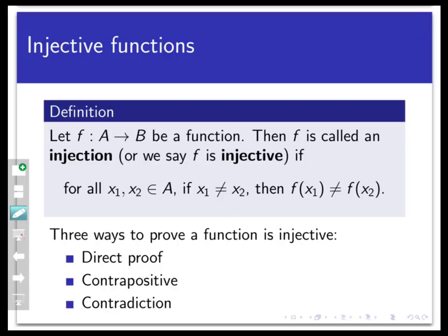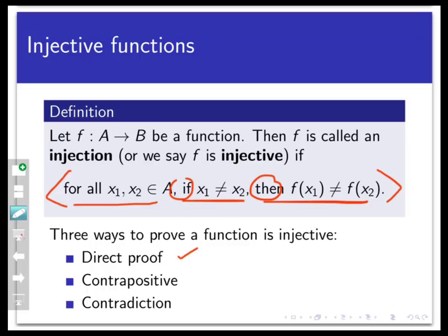The main point to note in the definition of injective functions is that it involves a universally quantified conditional statement: for all x1 and x2 in the domain of f, if x1 is not equal to x2, then f(x1) is not equal to f(x2). This is a form of statement we have worked with throughout the course. To prove a function satisfies this definition, I need to prove this conditional statement, which means three approaches: a direct proof, a proof by contraposition, or a proof by contradiction. There is a fourth approach, a special case, that I'll mention at the end.